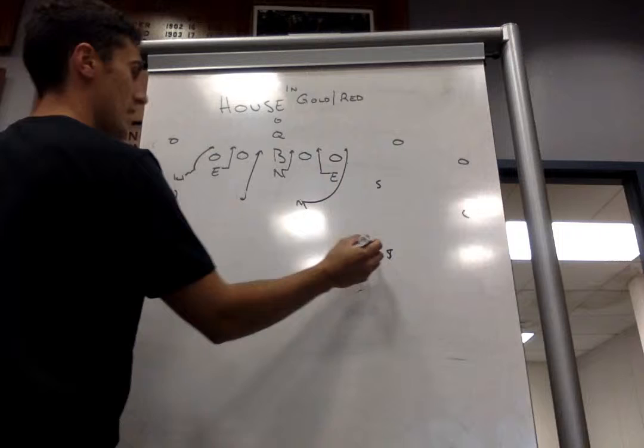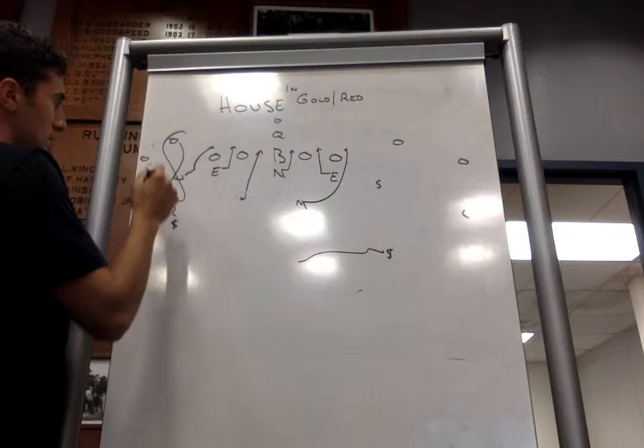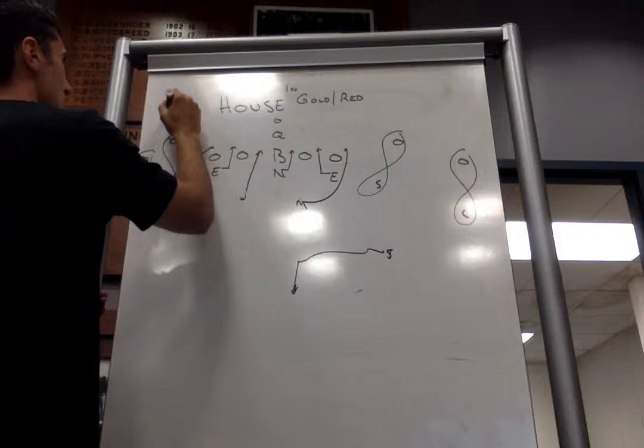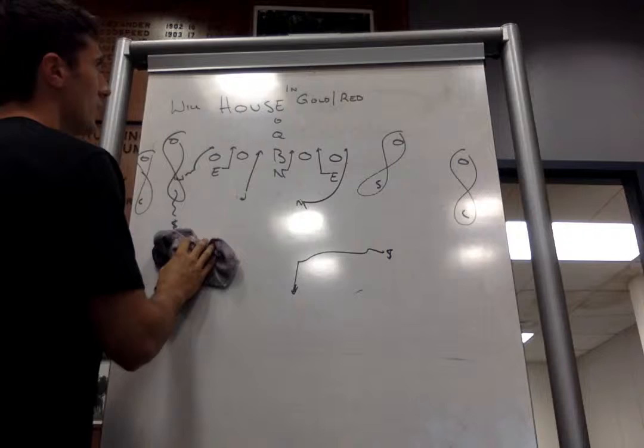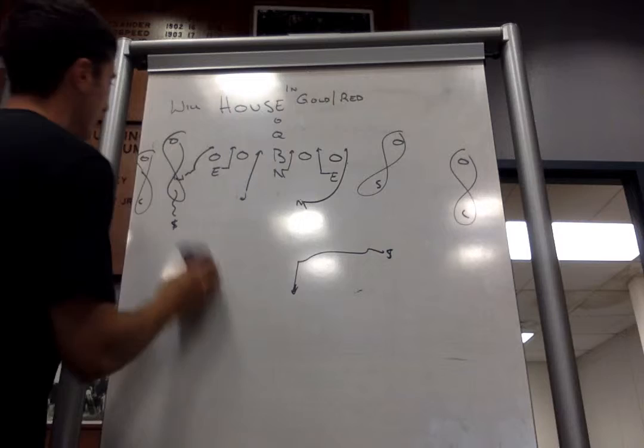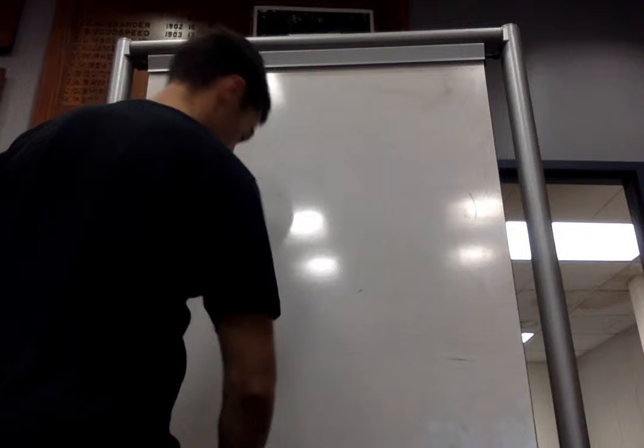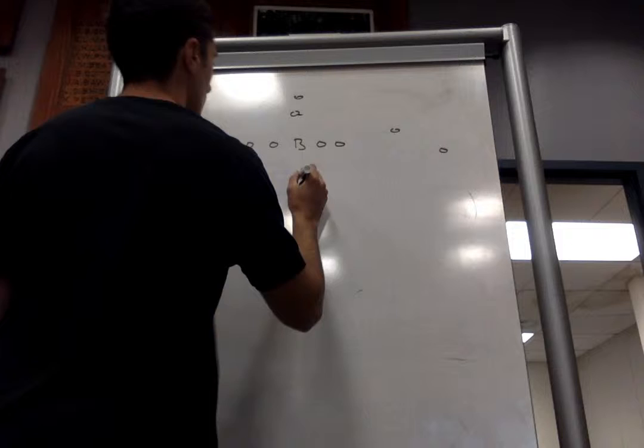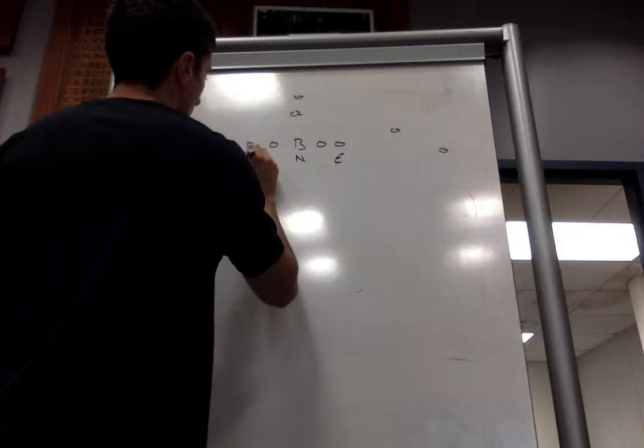Safety has man on two. Corner has man on one. Sam has man on two. Corner has man on one. We're deep three. So this would be will, house, gold, house, and gold. Will and house gold. Will. In. House. Gold.